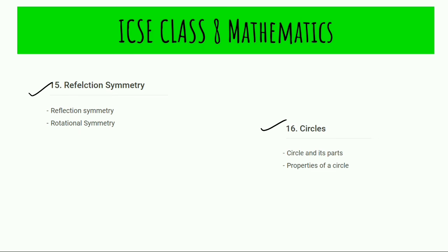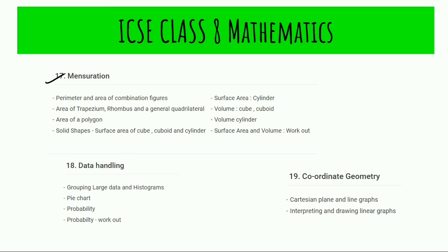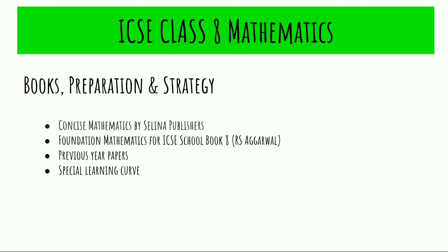Then we have Reflection Symmetry, followed by Circles: parts and properties of a circle. Then Mensuration: perimeter and area of combinations of figures, trapezium, rhombus, general quadrilaterals, area of polygons, solid shapes, surface area, and volume. Then Data Handling — a basic part of statistics, very important for later classes and especially if you take Science in Class 11 and 12. Finally, Coordinate Geometry: the Cartesian plane, line graphs, and interpreting and drawing linear graphs. That completes the full syllabus.